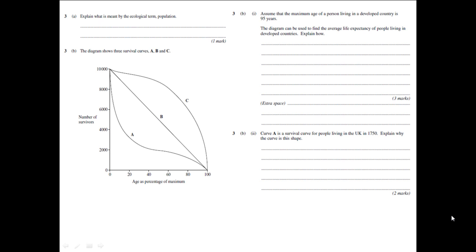If we look at the first question, explain what is meant by the ecological term population. This is only worth a single mark. For this, you are going to need to be quite specific and so you need to say that it is a number of a single species living in a given area at a given time. The important key terms there are single species and then referencing the given area at a given time.